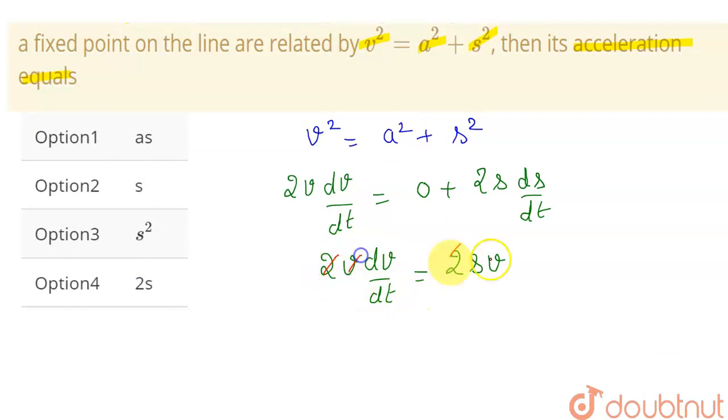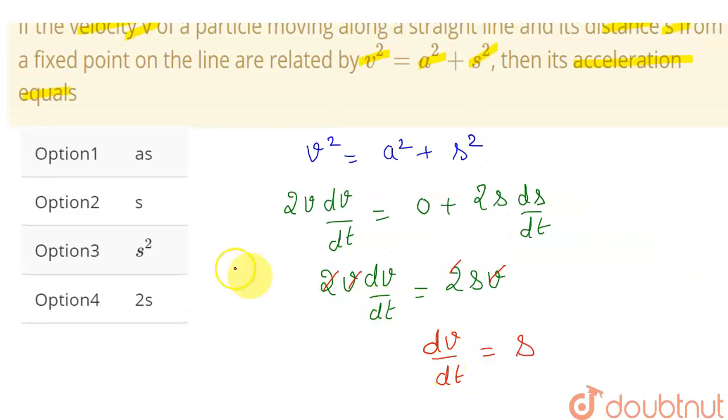Now the 2s cancel and the v's cancel. So dv/dt, which is my acceleration, equals s. Therefore, the acceleration is s, so option 2 is correct. Thank you.